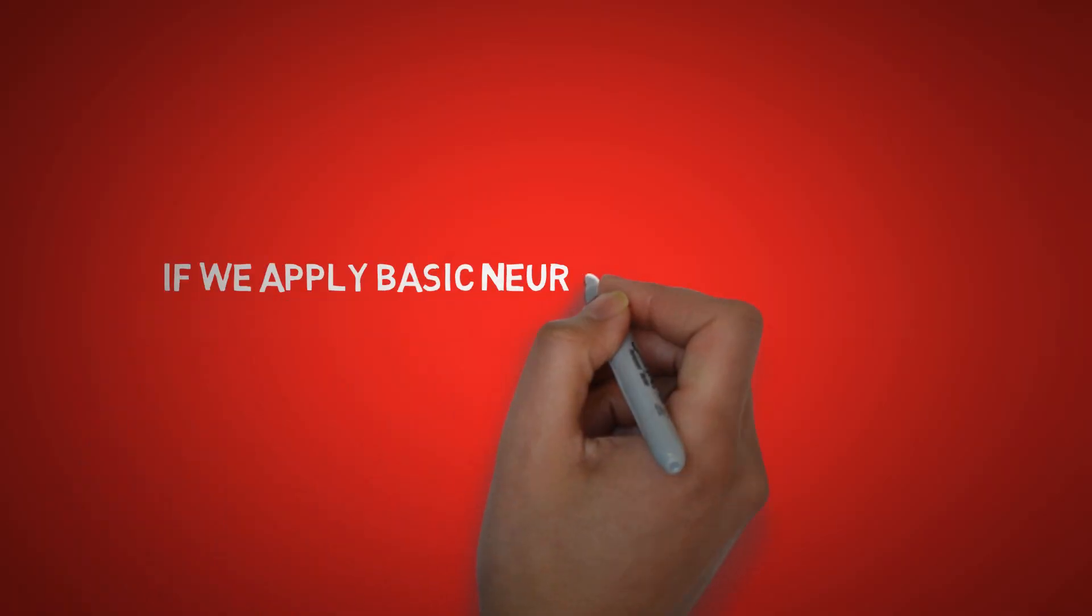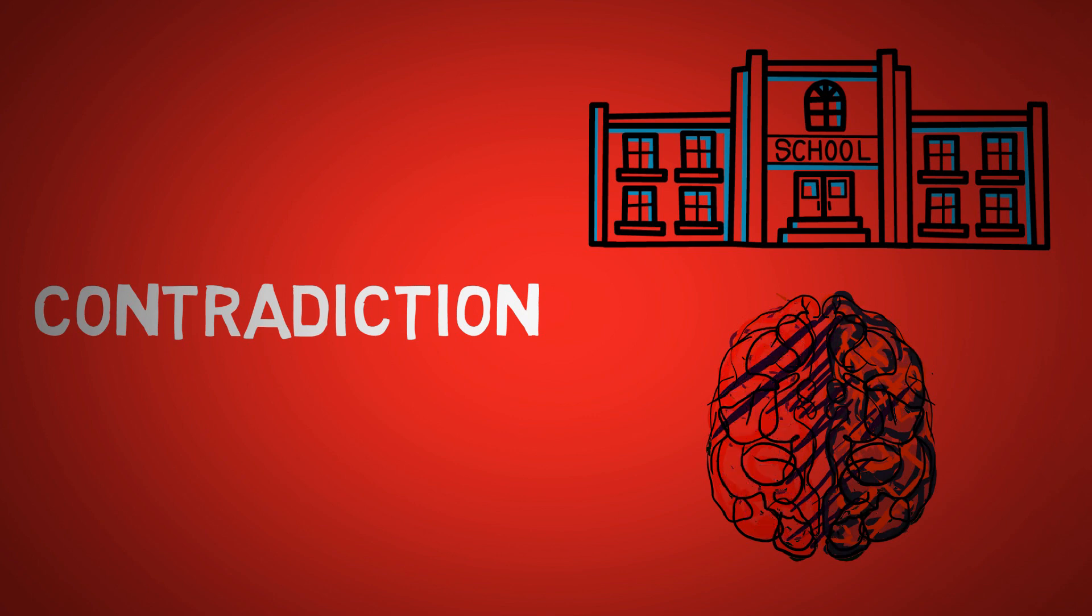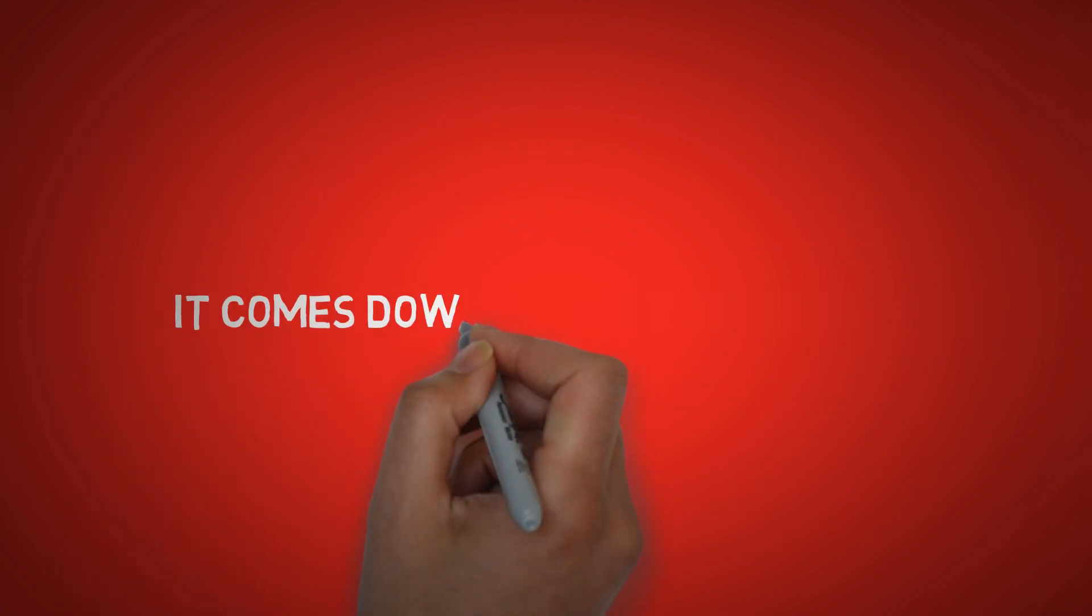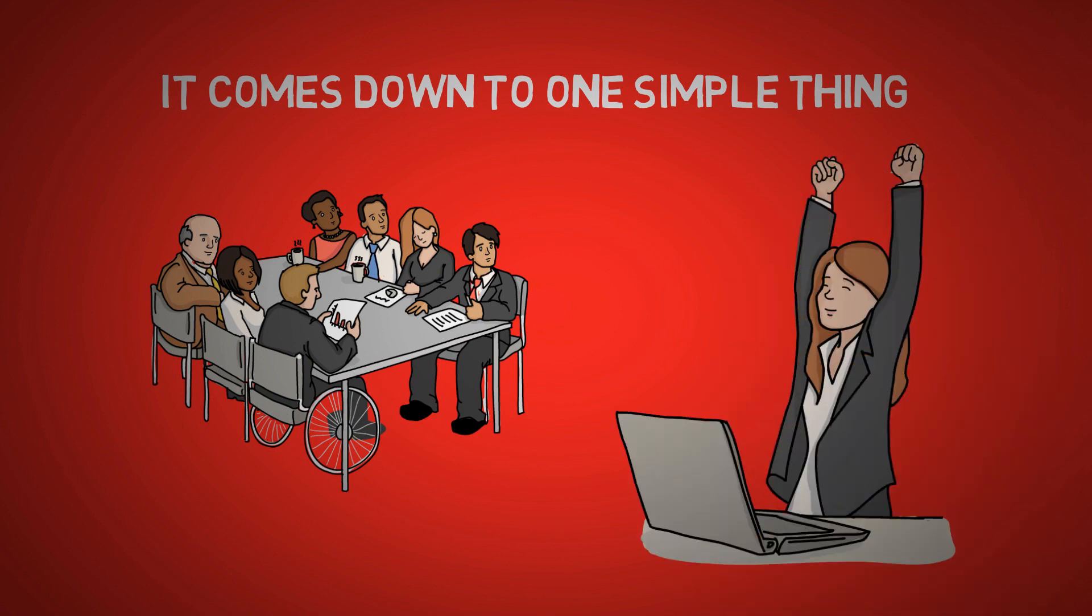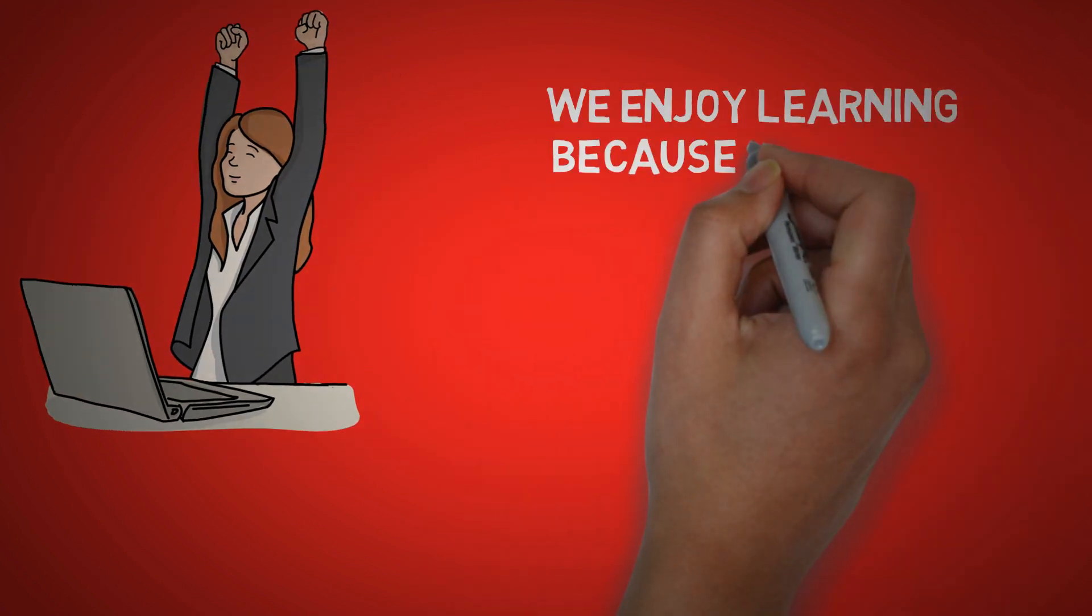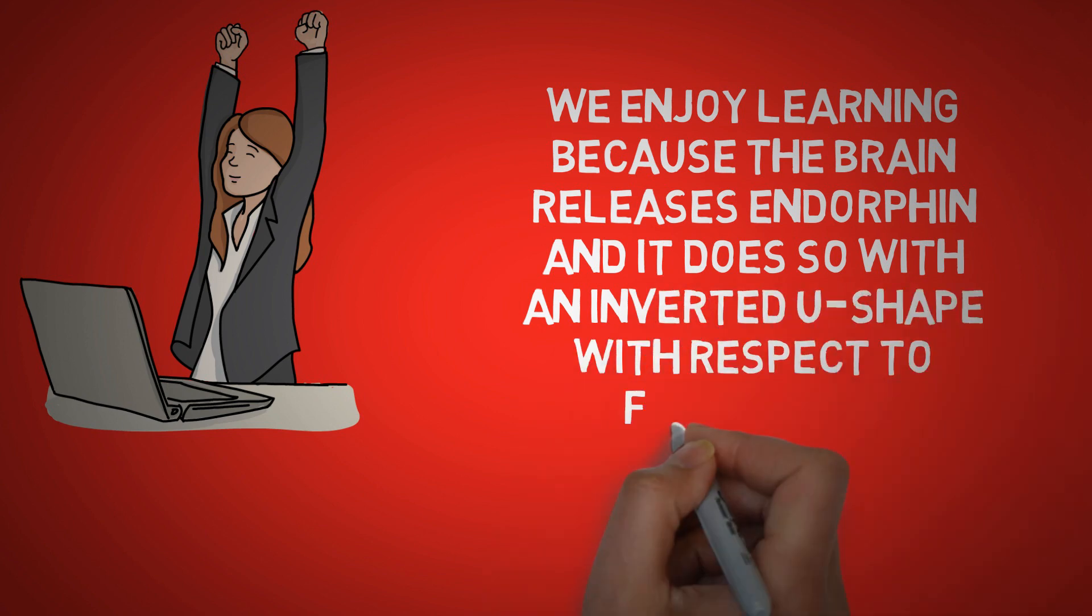If we apply basic neuroscience principles to our educational system, it would change millions of things. To begin with I must explain why there is a contradiction between how we teach and how the brain works. It comes down to one simple thing: humans are learners and find joy in learning. In fact we enjoy learning because the brain releases endorphin and it does so with an inverted U-shape with respect to familiarity.